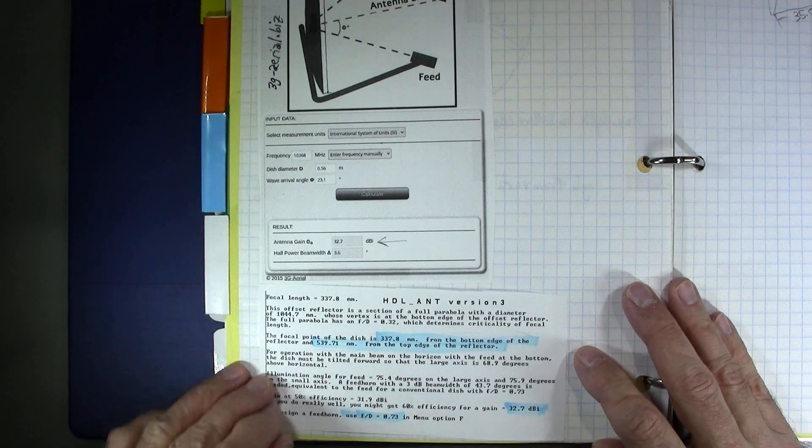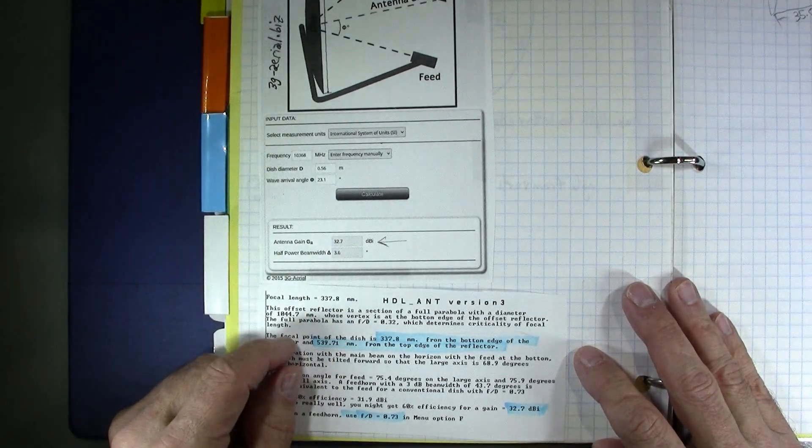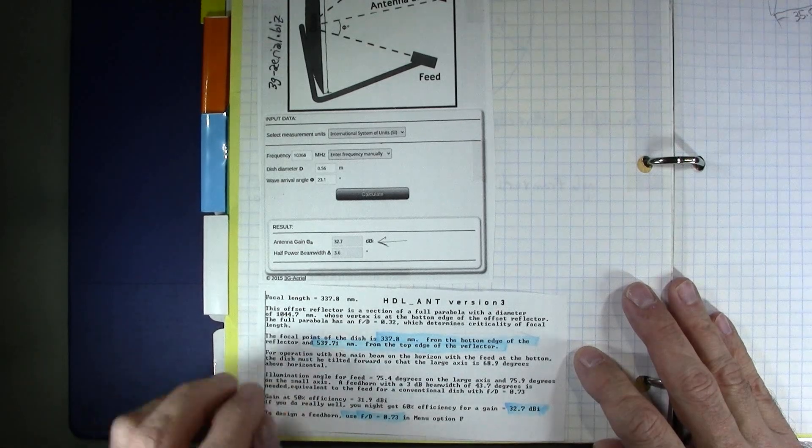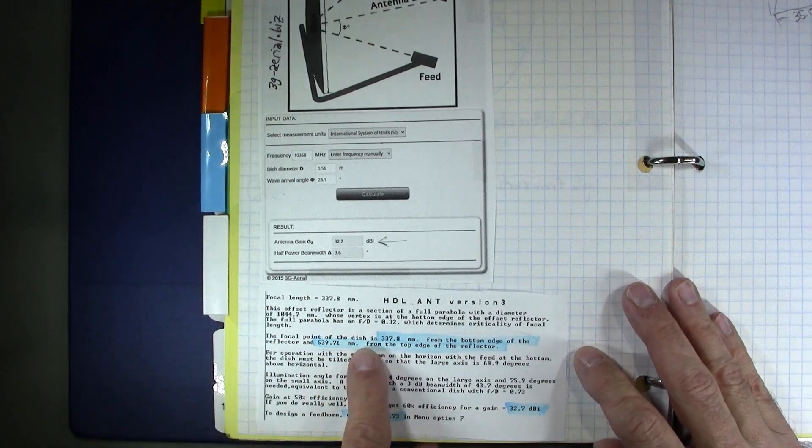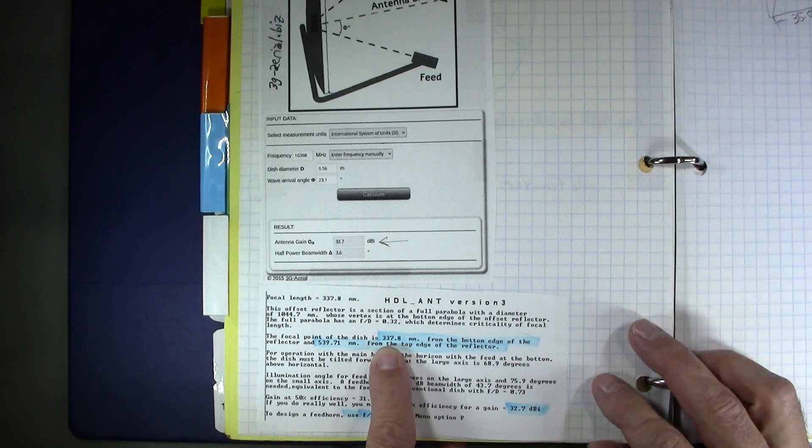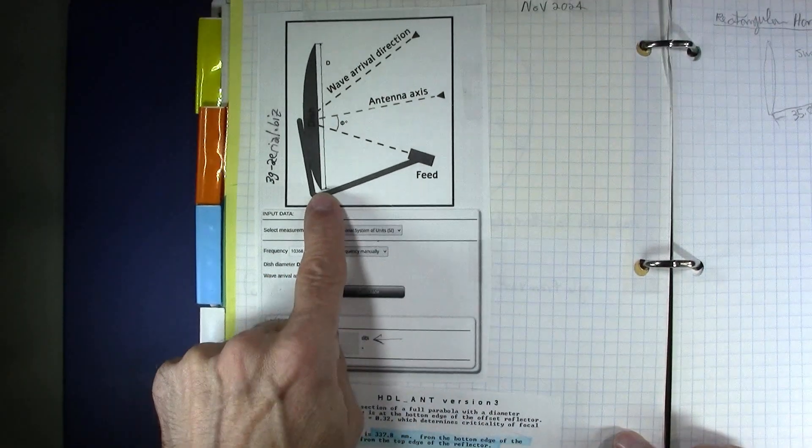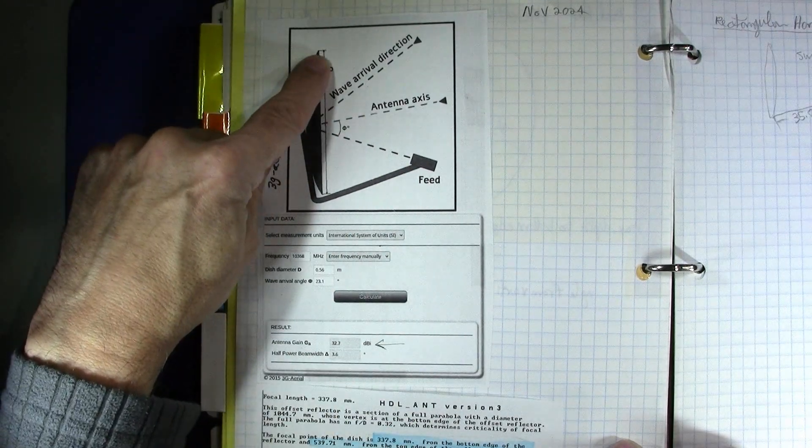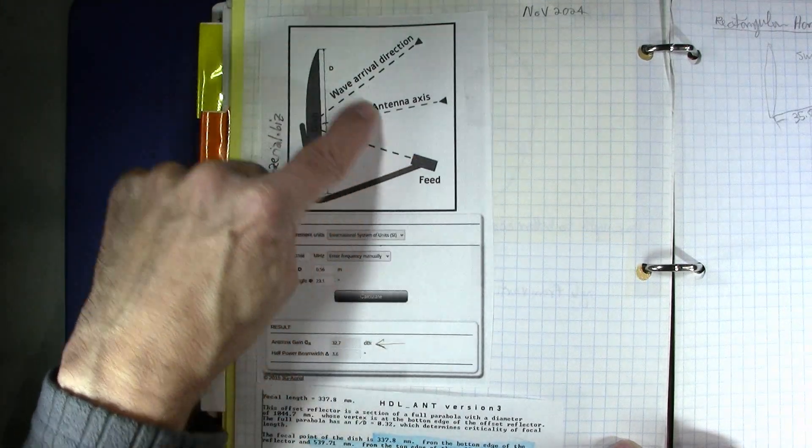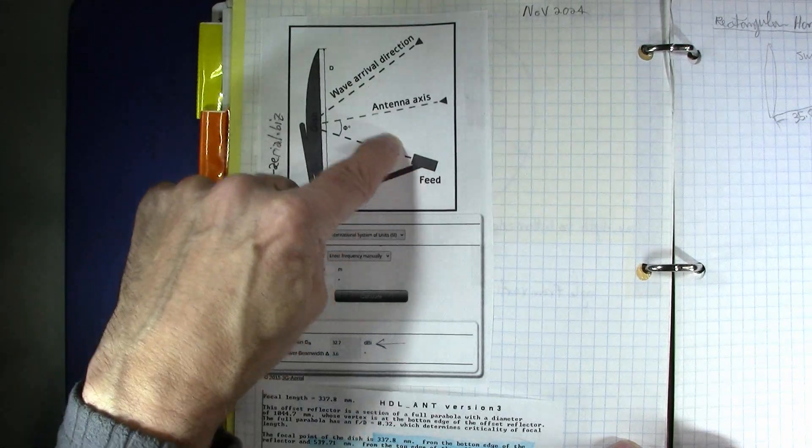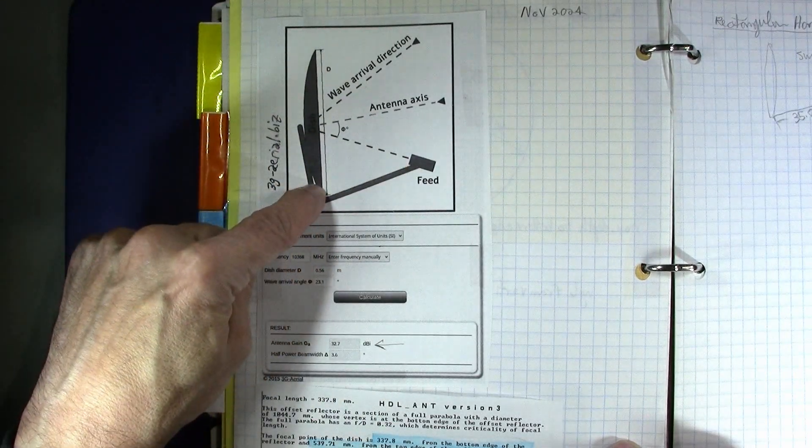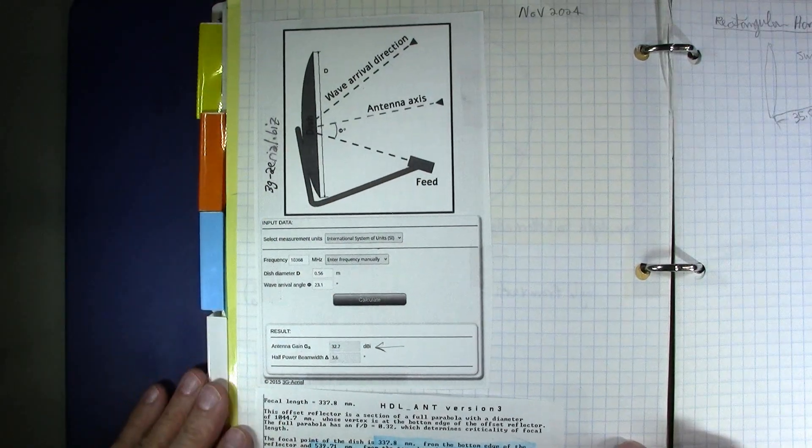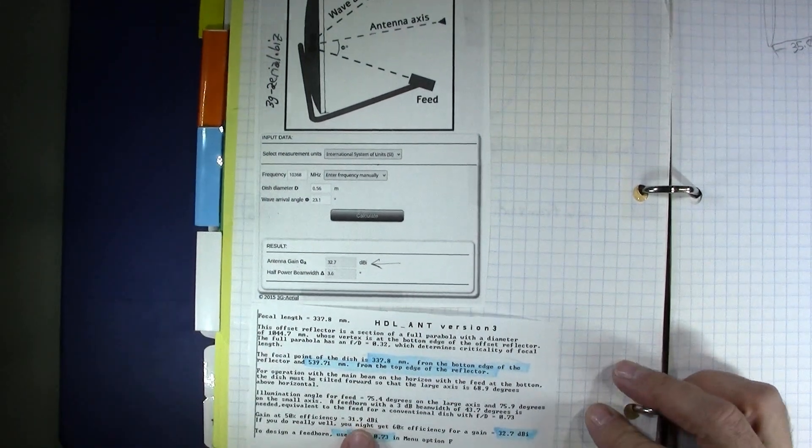So in this case here we can use the measurements we took on the dish, fit those measurements in. And what we're told is that the focal point of the dish is 337 millimeters from the bottom edge of the dish. That's the distance here. And it's 539 millimeters from the top here. So you can use the string method, the rope, the string, and then find a good location of the feed point. That's one way to do it. With this tool that's what we get.